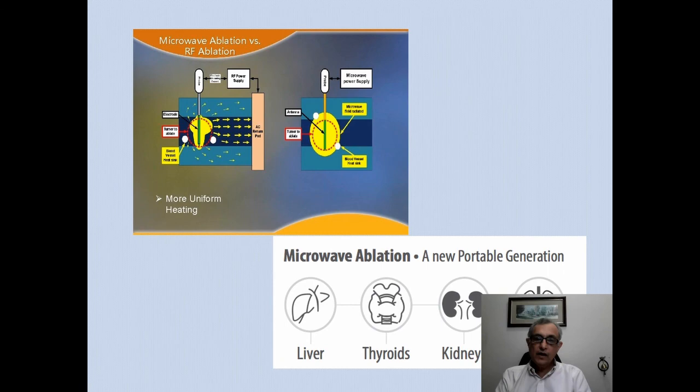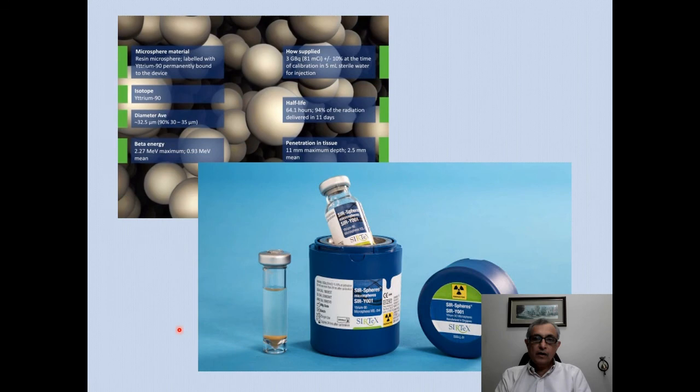Regarding ablative therapies, there are generally two modalities: radiofrequency and microwave. Both have different mechanisms of action. Microwave ablation is now considered to have more uniform heating and can be used to treat liver, thyroid, kidney, and even breast tumors.